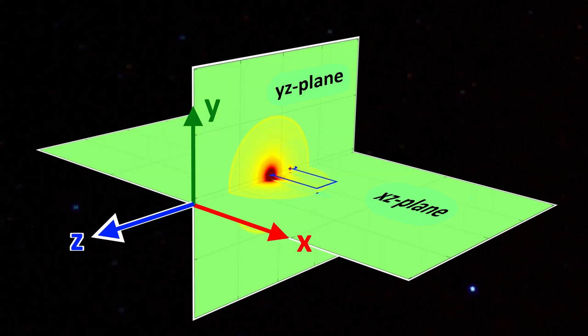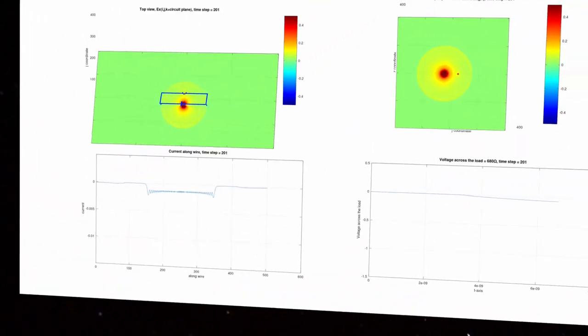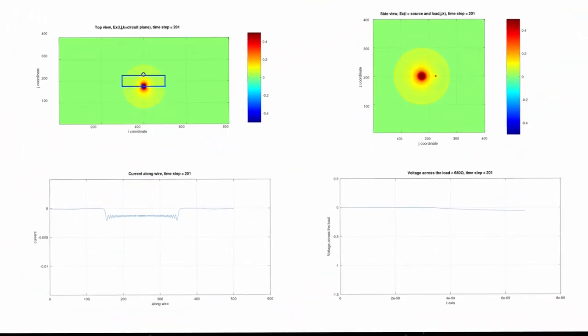Nevertheless, the simulation result can still tell us the sequence of events happened in the circuit. During the simulation, the electric field EX on the YZ plane cutting through the battery and the light bulb is shown in the top right plot, and EX on the XZ plane of the circuit is shown in the top left plot.